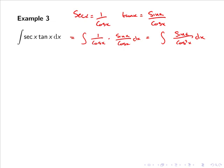Here we observe that sin x on the numerator is a multiple of the derivative of cos²x on the denominator, and hence we can use substitution. If we let u = cos x, then du = −sin x dx.